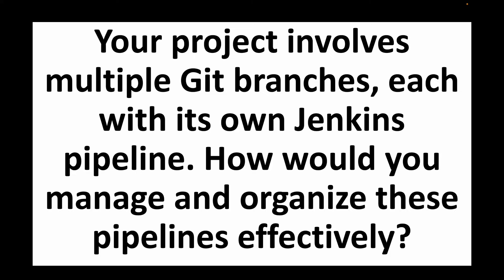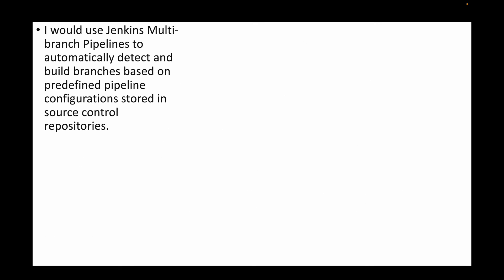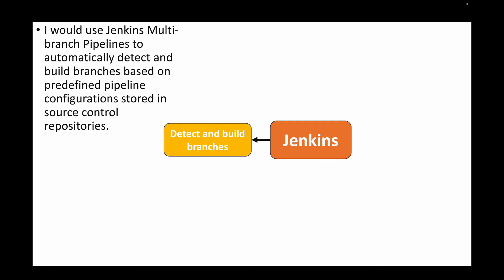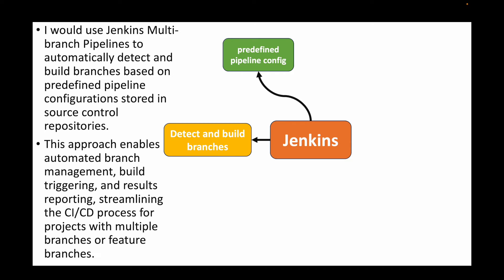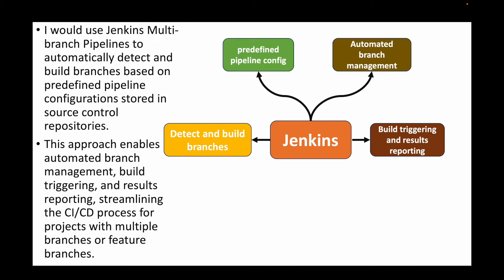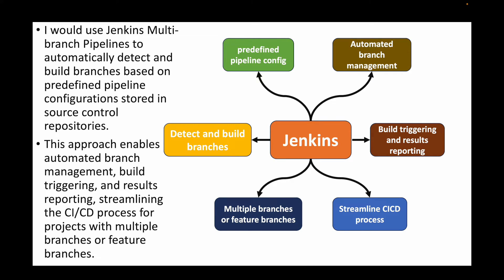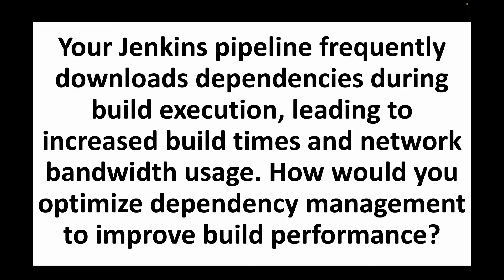The next question: your project involves multiple Git branches each with its own Jenkins pipeline — how would you manage and organize these pipelines effectively? Use Jenkins multi-branch pipelines to automatically detect and build branches based on predefined pipeline configurations stored in your source control repository. This approach enables automated management of branches, triggering builds and reporting results, helping to streamline the CI/CD process for projects with multiple or feature branches.